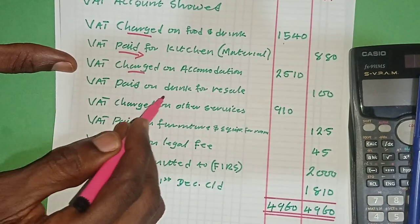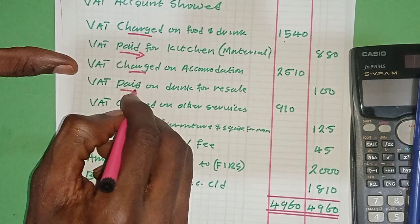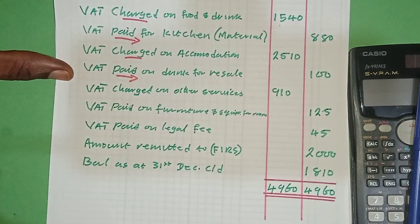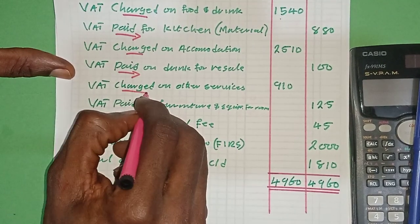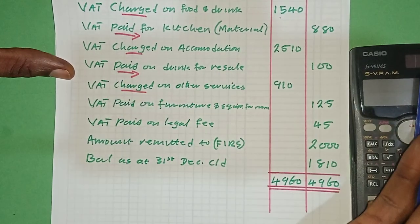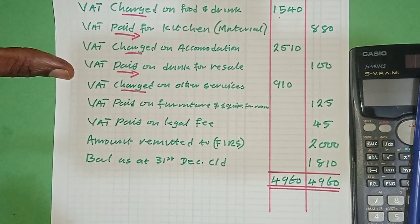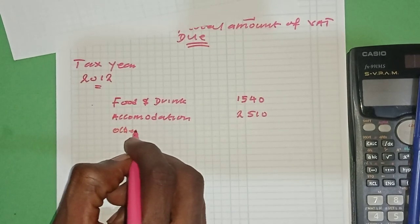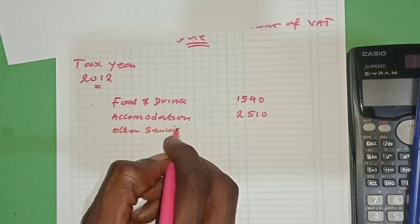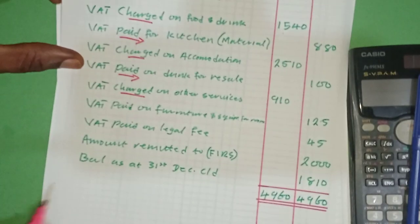VAT paid on drinks for sale - that is tax input, leave it. We are interested in tax output for now. VAT charged on other services - you charge VAT when you are selling. You charge VAT when you are selling, and you pay VAT when you are buying. So other services: 910.